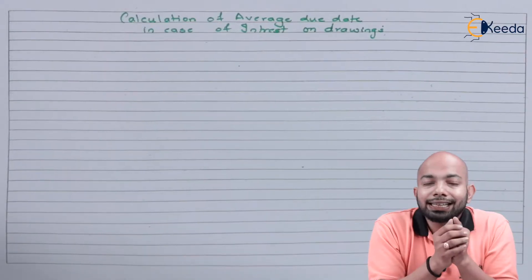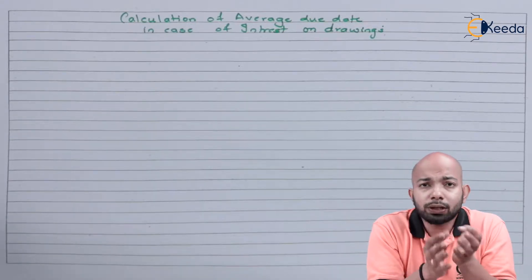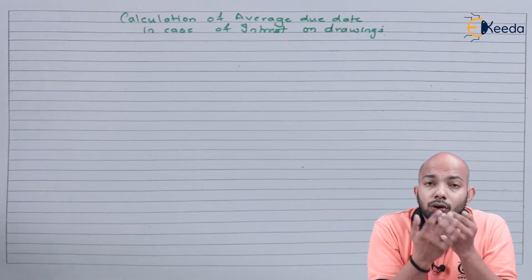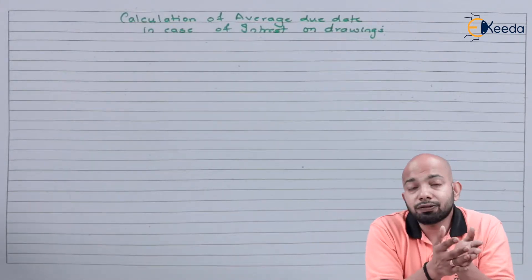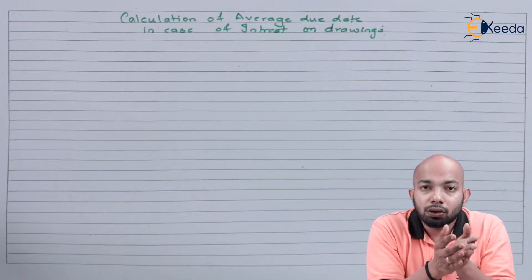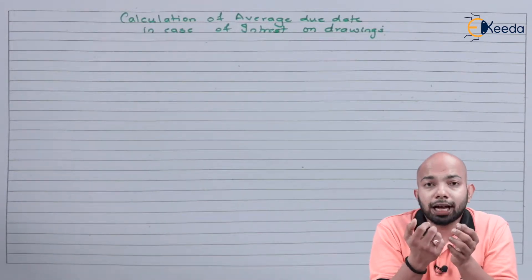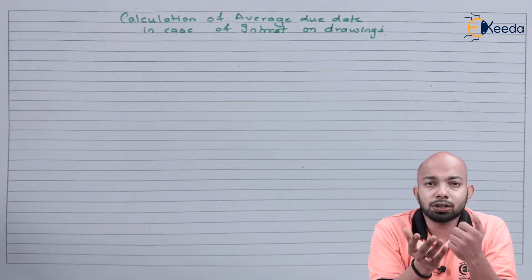So what exactly do we mean by drawings? Drawings basically is when amount is withdrawn from the capital account of the partners at regular time intervals. When the partners have capital accounts and they withdraw certain amounts from that on regular intervals or during certain emergencies, that may be possible.